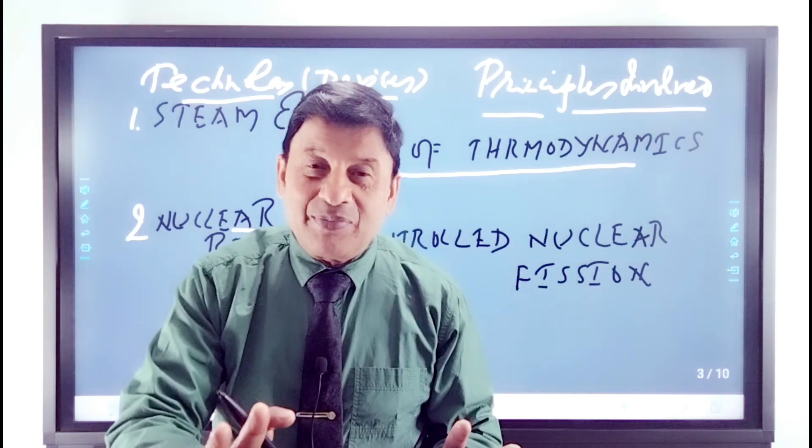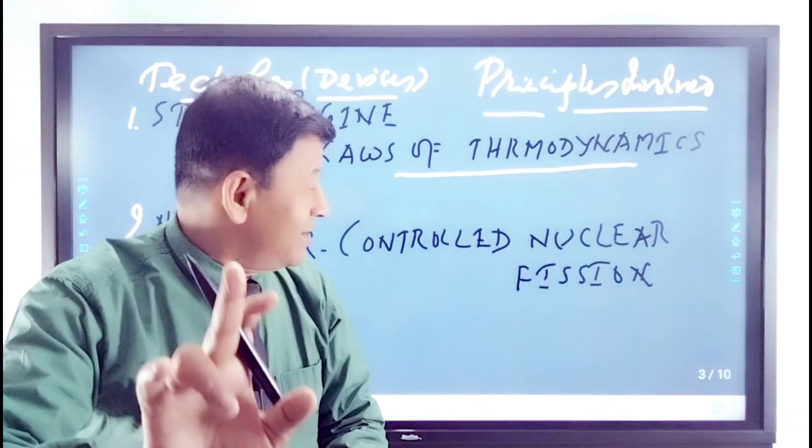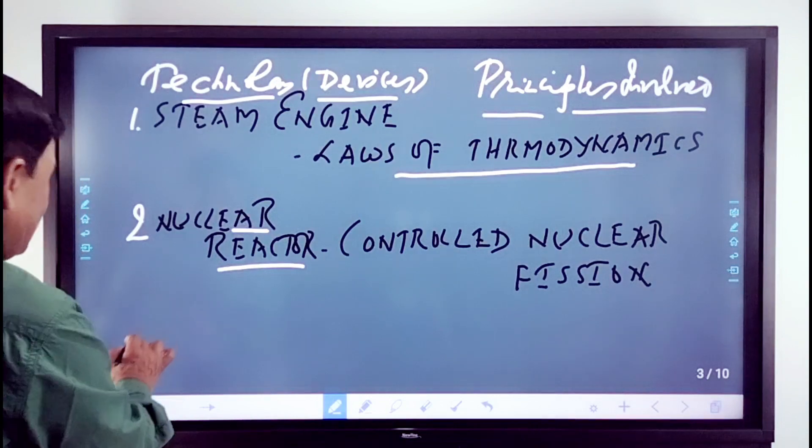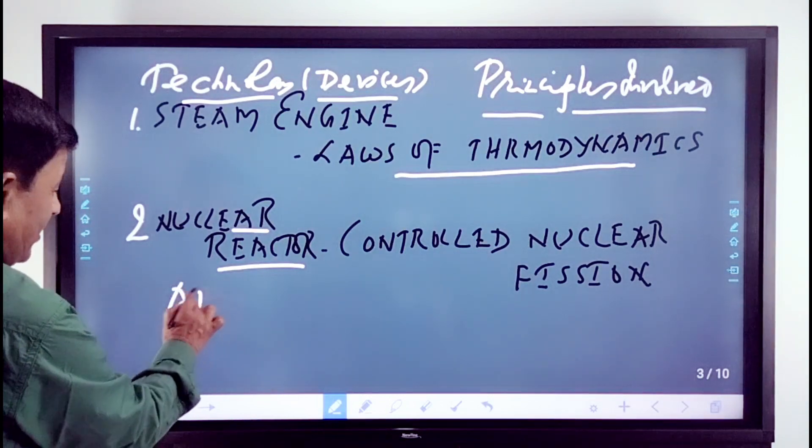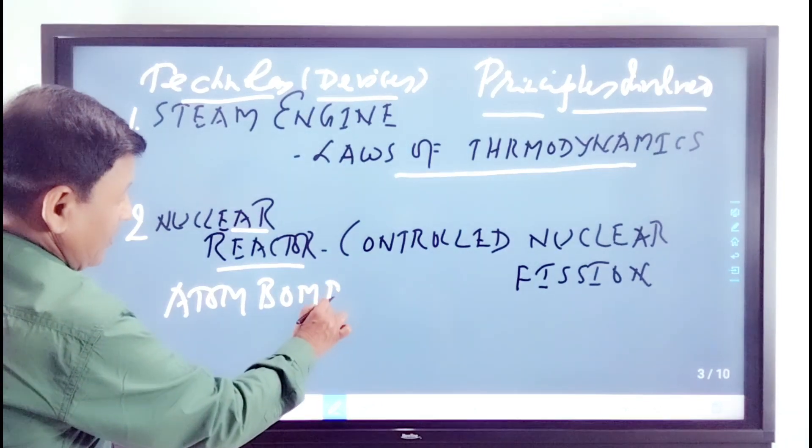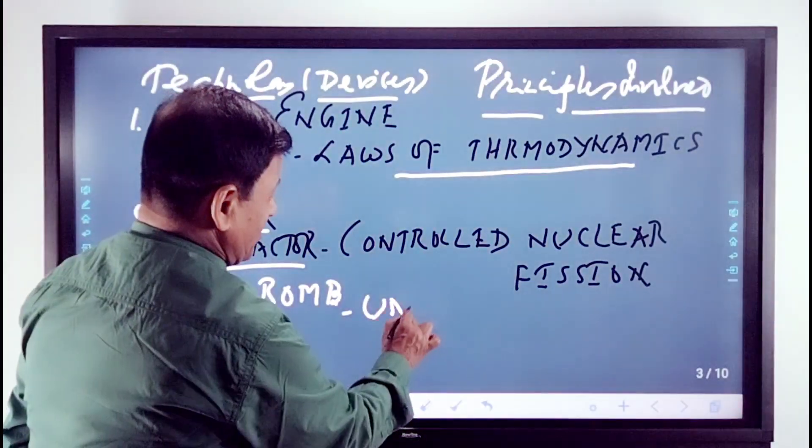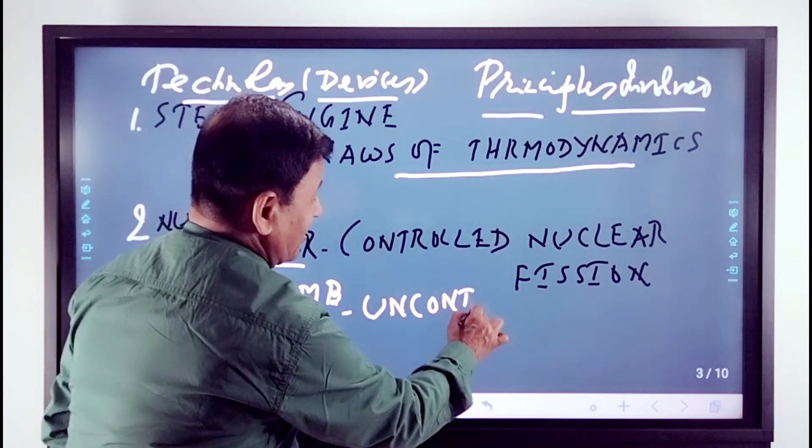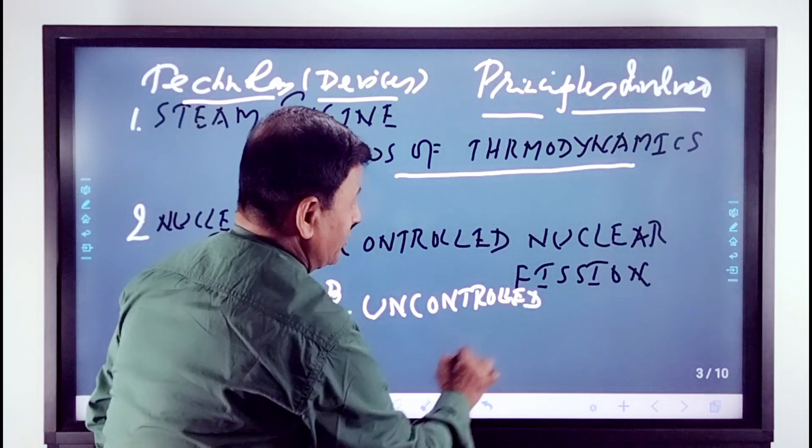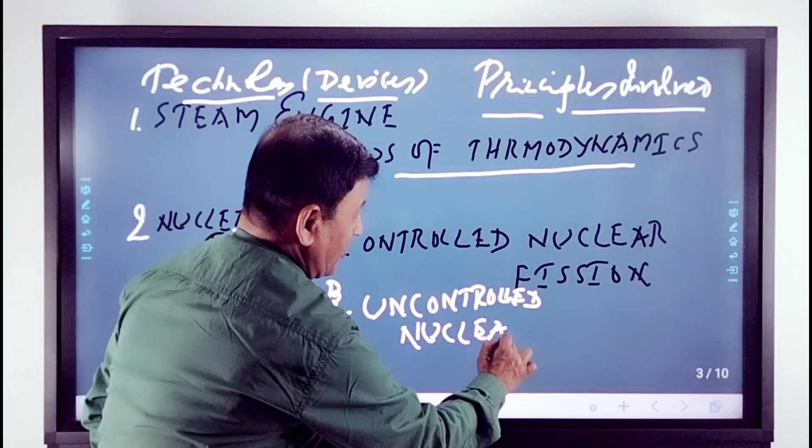Atom bomb. We will say uncontrolled nuclear fission. Atom bomb's scientific principle is uncontrolled nuclear fission.